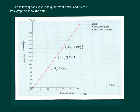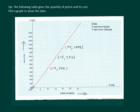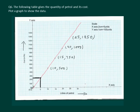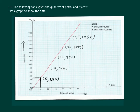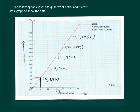This graph will be very useful in estimating a few more things. For example, if we need to find the amount to pay for 5 litres of petrol, we draw a perpendicular from the x-axis to the graph line and then from that point draw another perpendicular to the y-axis. We find that the coordinates of this point are (5, 250), meaning 5 litres of petrol will cost us 250 rupees. Similarly, we can find the value for any number of litres.